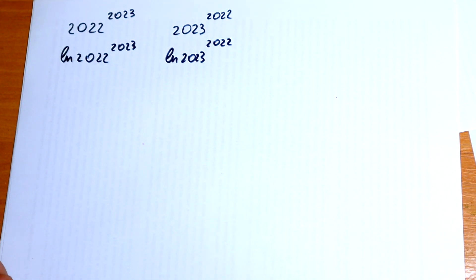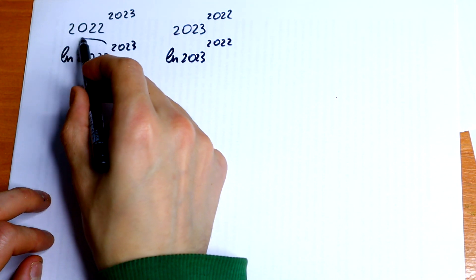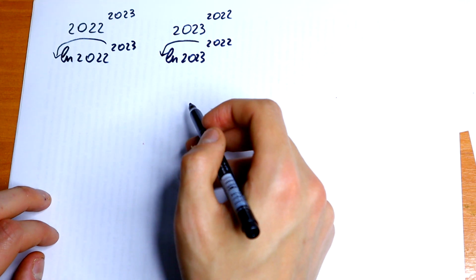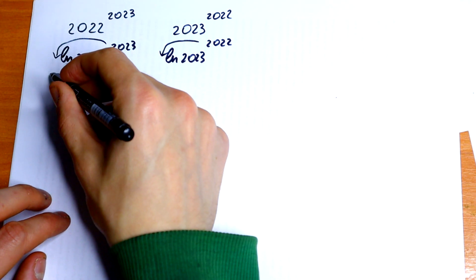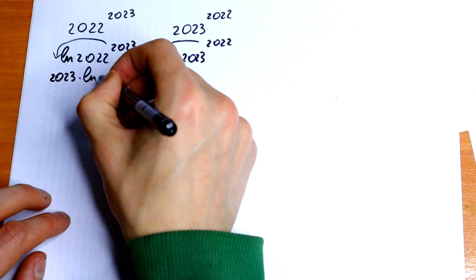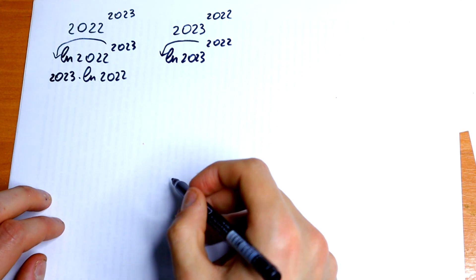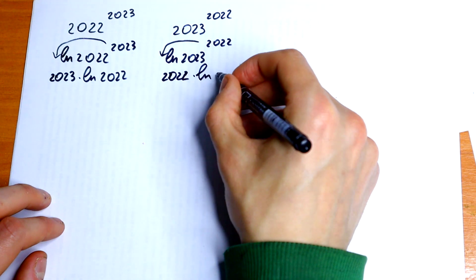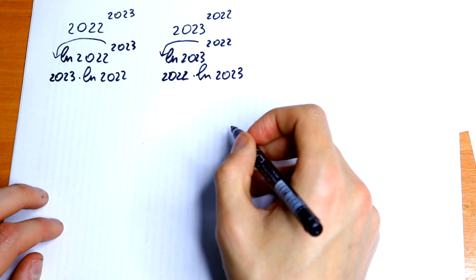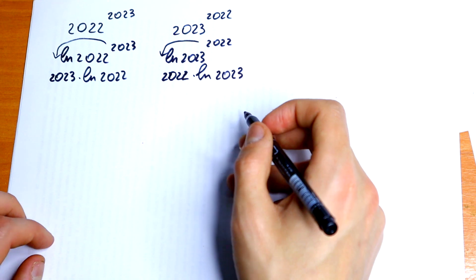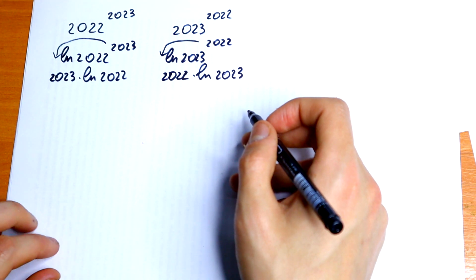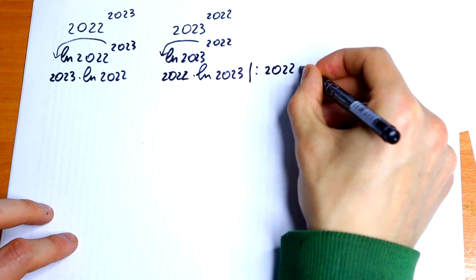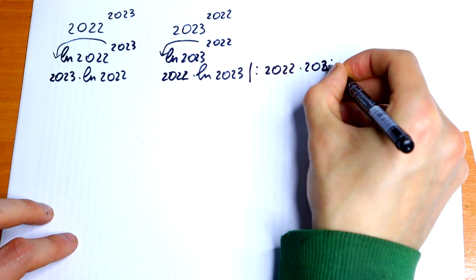We know the property that the exponent comes down in front. So we get 2023 times natural log of 2022 on the left, and 2022 times natural log of 2023 on the right. Nothing hard. What are we going to do next? I want to suggest a division — let's divide both sides by the product 2022 times 2023.